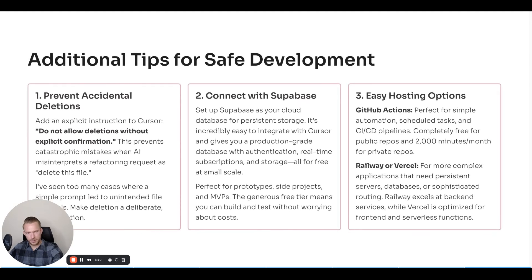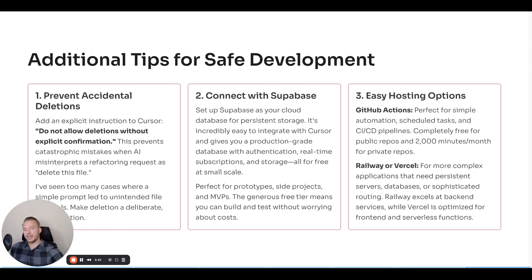My last tip: connecting with Supabase. If you have something you want to run on a cron job, GitHub Actions has 2,000 minutes per month for free on private repos, and completely free for public repos. I found it really easy to run a lot of our email analytics cron jobs by uploading to GitHub Actions. Everybody's telling me to check out Railway or Vercel and I haven't quite gotten there yet — I'm still running a lot of things locally or using GitHub Actions. We connect to Supabase a lot. Supabase is just an easy-to-use database that I highly recommend.